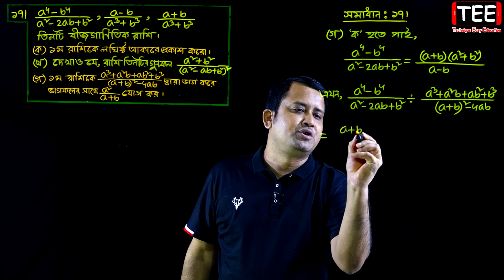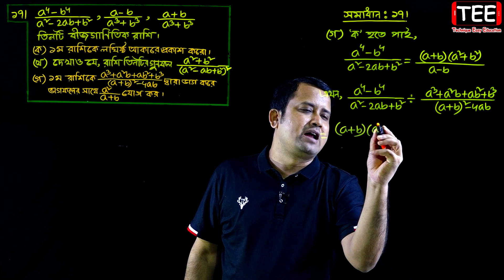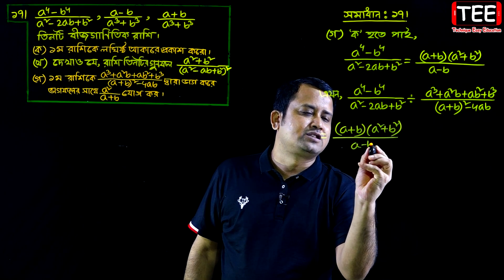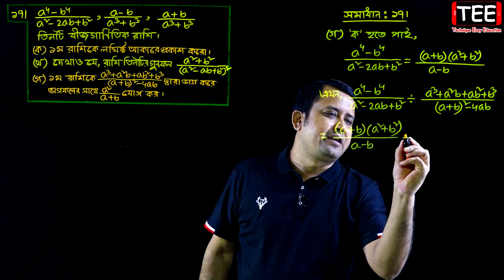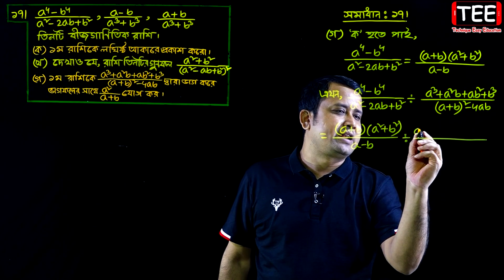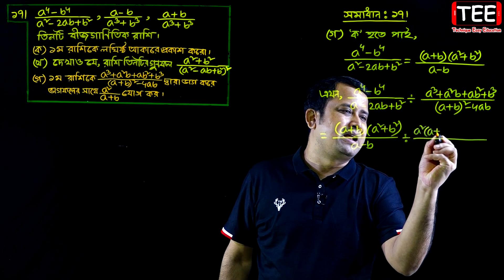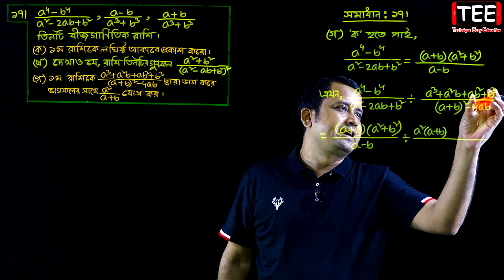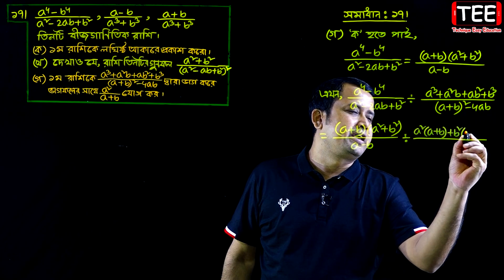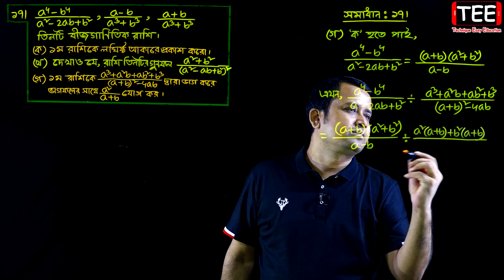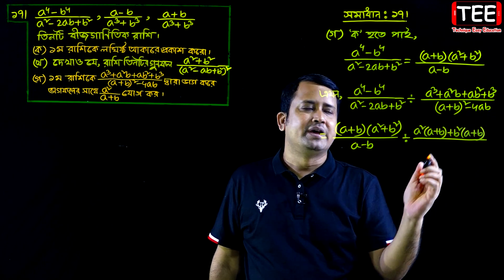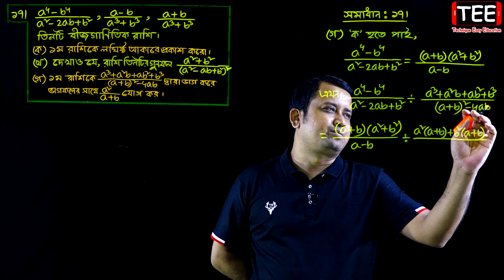A plus B into A square plus B square by A minus B. A minus B. A minus B. A plus B whole square minus 4AB. A plus B whole square minus 4AB.